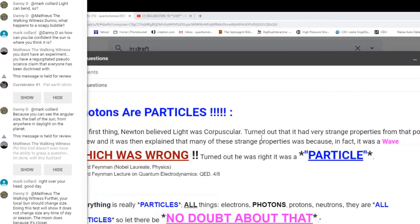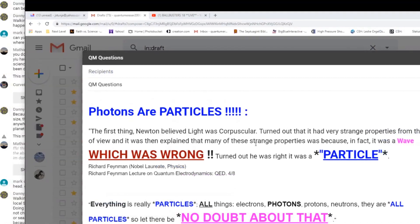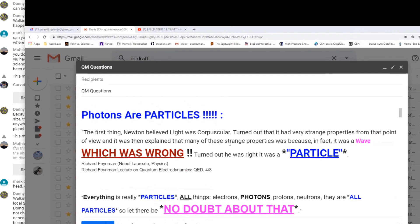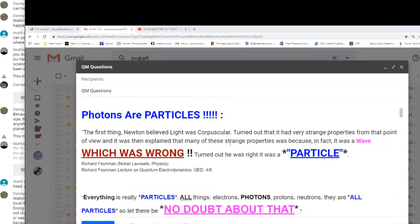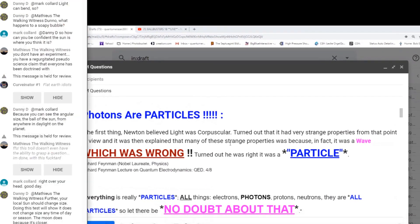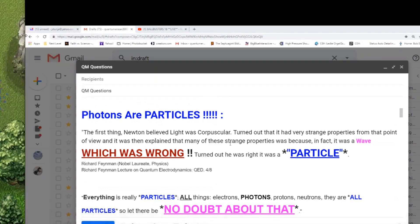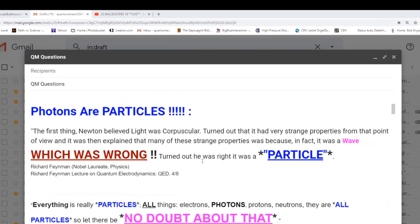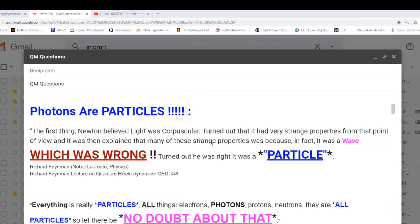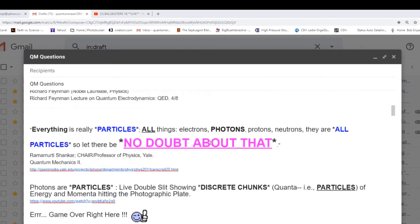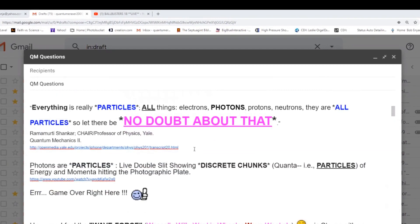All right, photons are particles. Let's take a listen to Richard Feynman. Newton believed light was corpuscular, turned out that it had very strange properties from that point of view, and it was then explained that many of these strange properties was because in fact it was a wave, which was wrong. Turned out he was right, it was a particle.